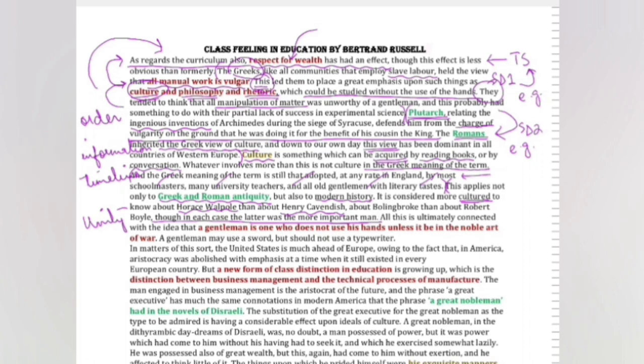Toh yehaan peh writer ne humein misal deke samjha bhi diya hai. If we look at the end of the paragraph, yehaan se humara concluding remark shuru hoota hai. We will consider this second concluding sentence as part of our second supporting detail. And the concluding sentence is a gentleman may use a sword but should not use a typewriter. Ab yeh typewriter kis kriye istamal hoota hai? Yeh wohi manual work hai jis ko vulgar consider kiya jata hai. Ab yeh dhekhain ki hamne paragraph shuru kiya toh humein joh ek lovez aya ta curriculum, uske baare mein kooi information nahi mili.